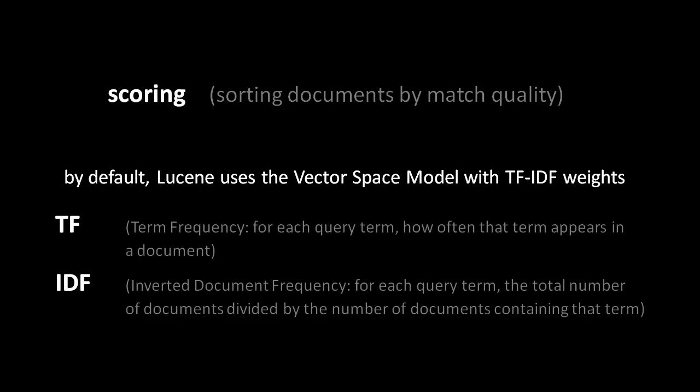TF stands for term frequency, as in how many times a particular term appears in a document. DF stands for document frequency, meaning the percentage of documents which contain that particular term. The I stands for inverse, so IDF is the total number of documents divided by the number of documents containing the term.